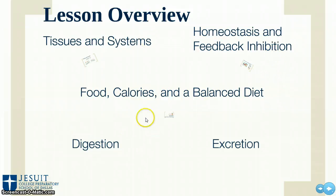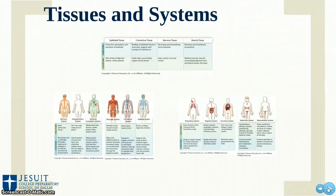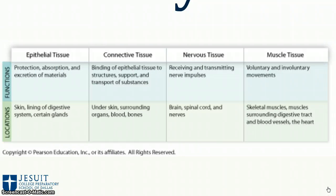Then we'll quickly review digestion, the different parts of it, and also excretion. This is going to serve as a springboard for us to go into more detail in class. So let's jump right into it with the tissues and systems of the body. Tissues are made up of different types of cells, and these cells can generally be grouped into four main tissue types: epithelial tissue, connective tissue, nervous tissue, or muscle tissue.